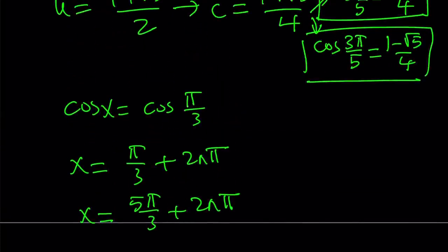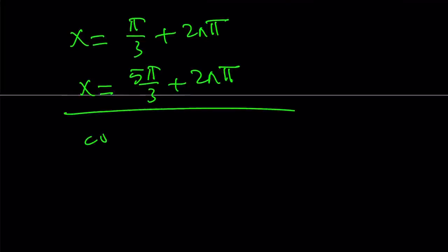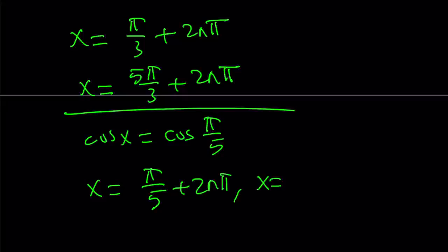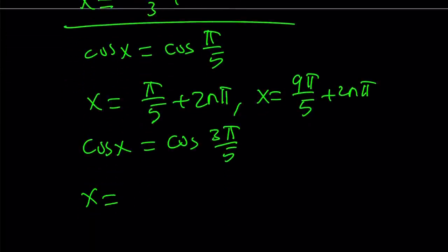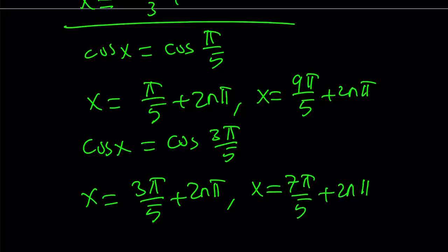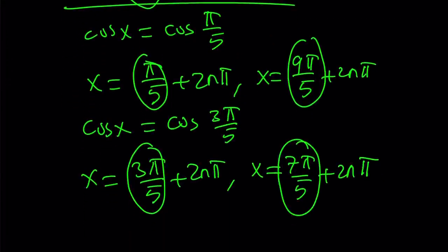And the other equations are going to give us the following. So, we can safely say that if cosine x is equal to cosine π/5, then we get π/5 plus 2nπ, and the other solution is 9π/5 plus 2nπ. And the other equation, cosine x equals cosine 3π/5, is going to give us 3π/5 plus 2nπ, and the other solution is 7π/5 plus 2nπ. Obviously, if you're looking for solutions between 0 and 2π, then you're looking at these values only.